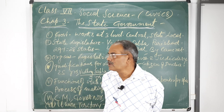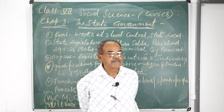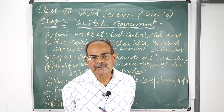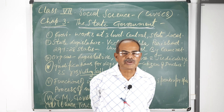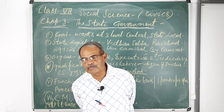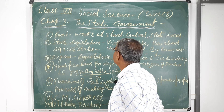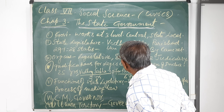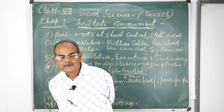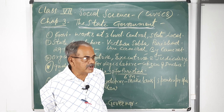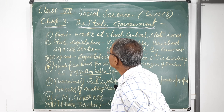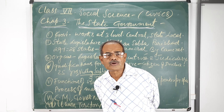So, what is the government? In simple terms, we can say everywhere there is a requirement of administration — either school, either our family, either state, or the central government. Each and every state requires a government. When we take care of administration at the state level, the central government also needs to rule.